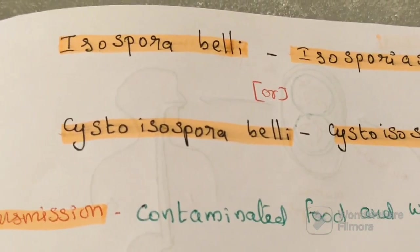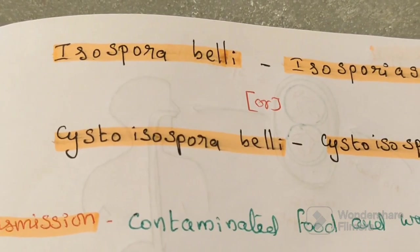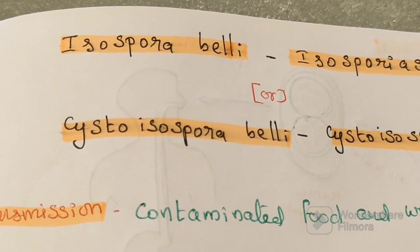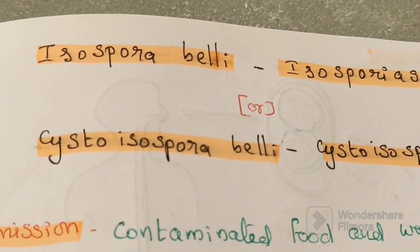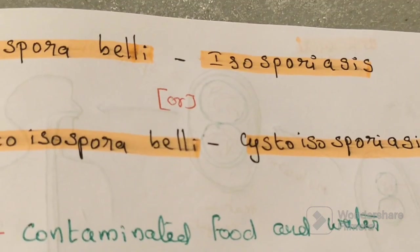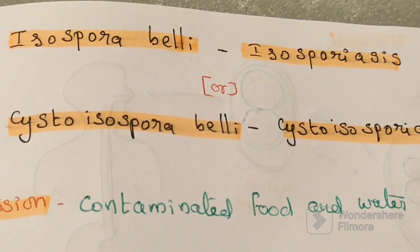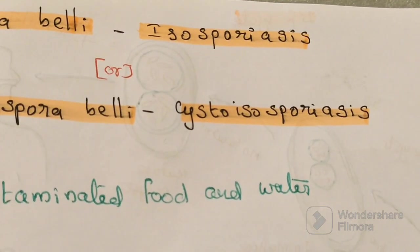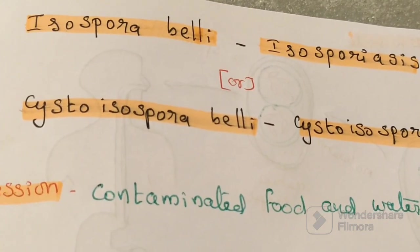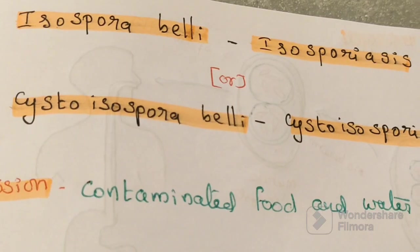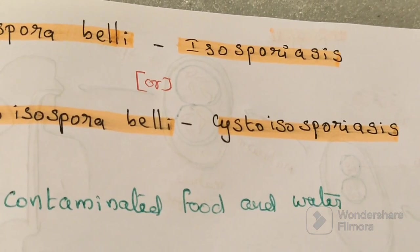In this video, we will discuss Isospora belli, also called Cystoisospora belli. Isospora belli causes a disease called isosporiasis, and by its other name, Cystoisospora belli, it causes cystoisosporiasis.